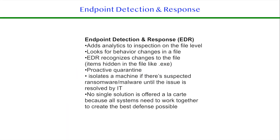Let's summarize these points. Endpoint detection and response — EDR — adds very granular inspection to any emails at the file level. EDR looks for behavior changes in a file; that's where proactive quarantine comes into play. The EDR system will isolate a machine if it suspects any types of wrongdoing, specifically ransomware or malware. No single solution is offered à la carte. Our best vendors — I'm using Masergy here as an example — will provide their early detection response system as just one of many components that they provide as a cohesive solution, making your defense system as strong as possible.